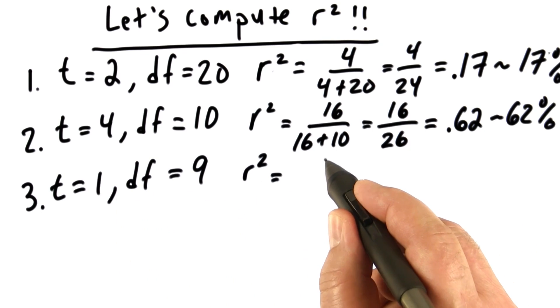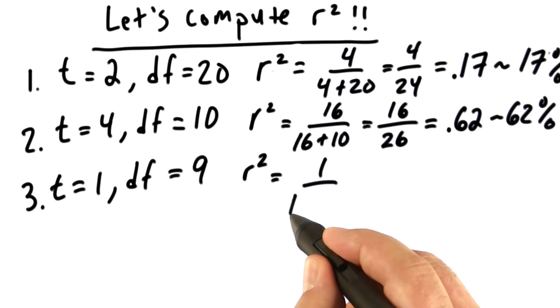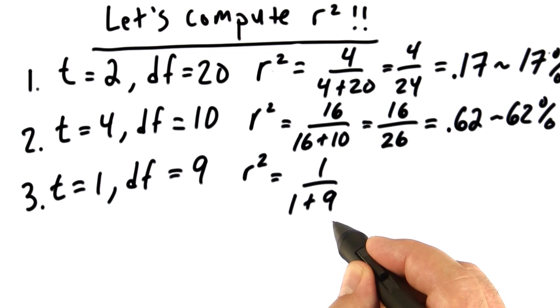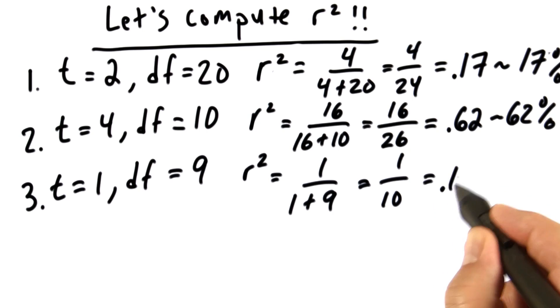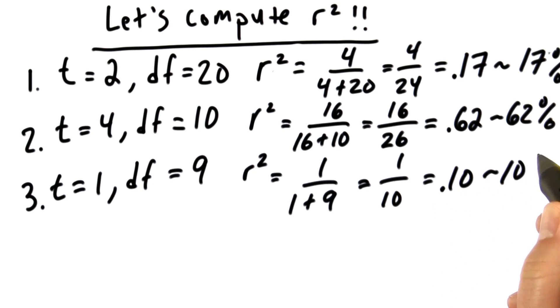Third example, well, 1 squared is 1. That goes in the numerator. Put that again in the denominator. We're going to add 9 to that. That gives us 1 over 10, which is .10, which is 10%.